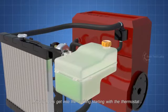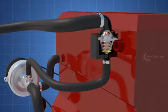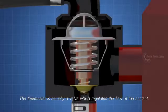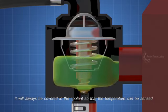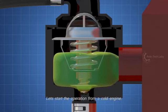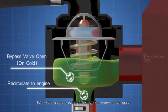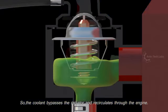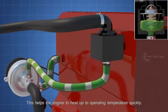So, finally, let's get into the working, starting with the thermostat. The thermostat is actually a valve which regulates the flow of the coolant. It will always be covered in the coolant so that the temperature can be sensed. Let's start the operation from a cold engine. When the engine is cold, the bypass valve stays open. So, the coolant bypasses the radiator and recirculates through the engine. This helps the engine to heat up to operating temperature quickly.